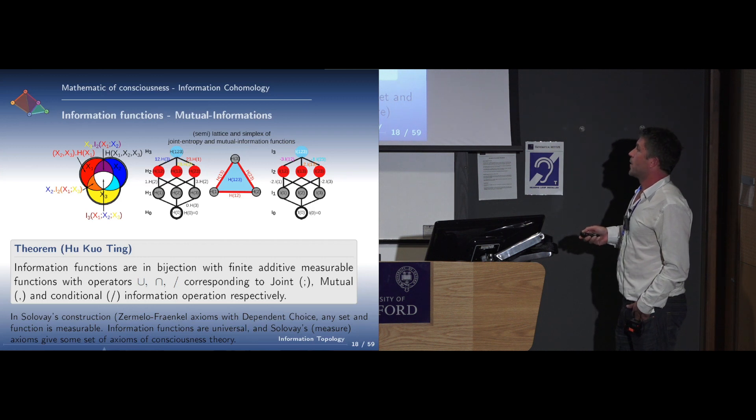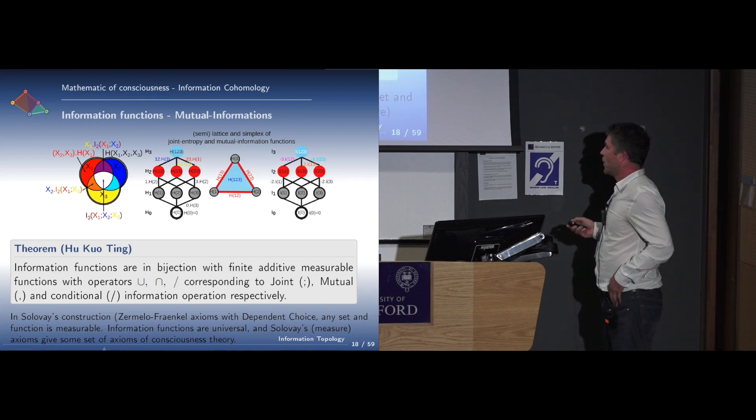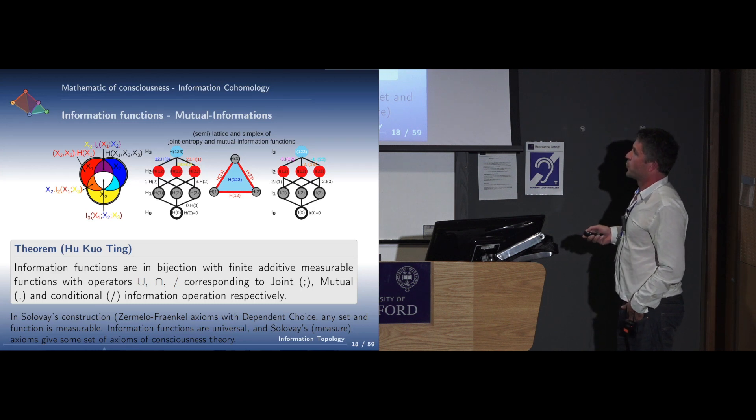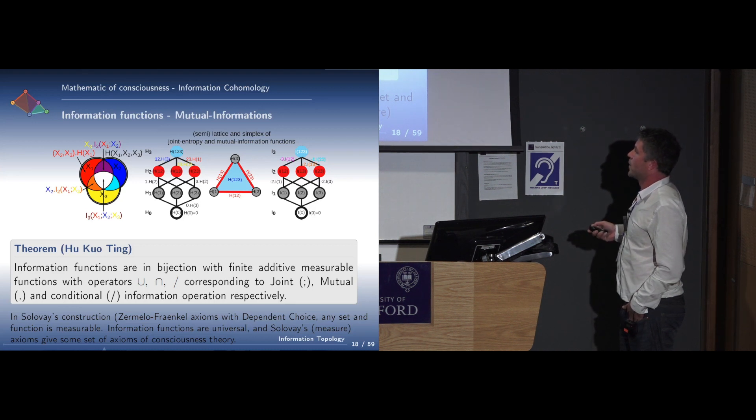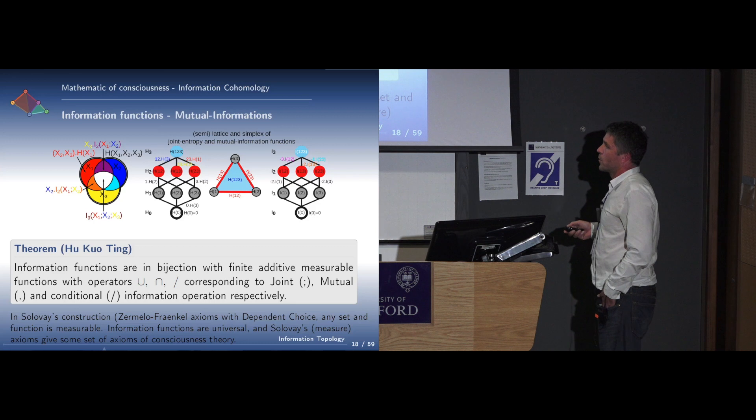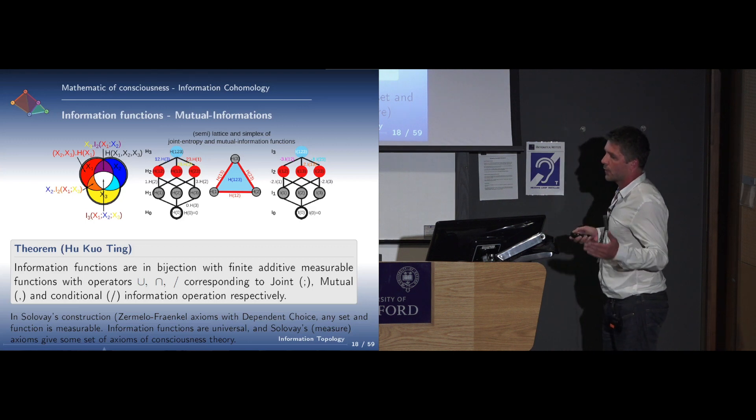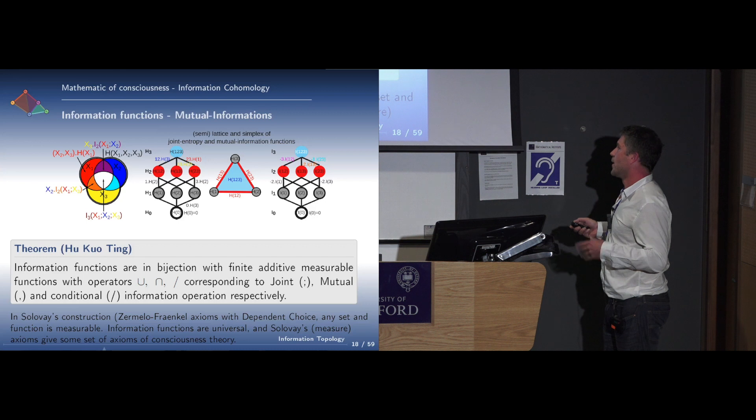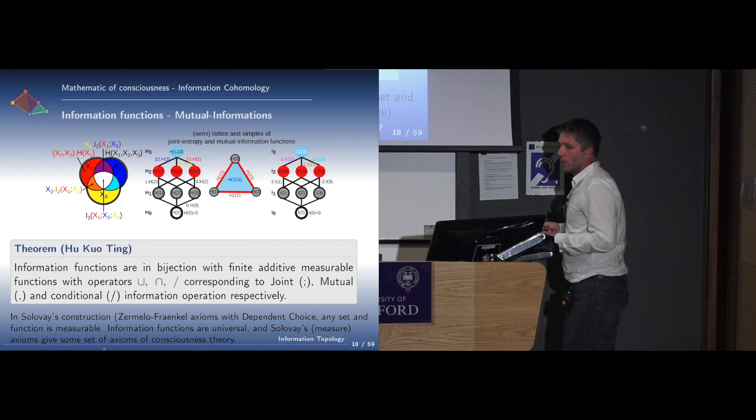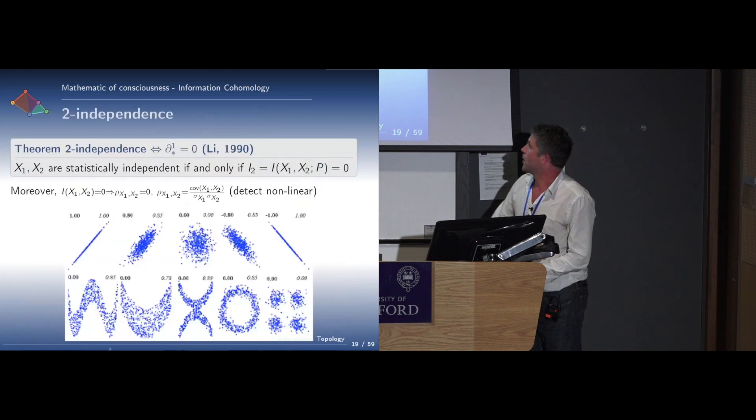In Solovay's construction of the Zermelo-Fraenkel axiom with dependent choice, which is a weak axiom of choice, any set and function are measurable. In this context, information functions become quite universal, and Solovay's measure axioms give some set of axioms for consciousness theory. You can see measure theory as stated first by Lebesgue in set theoretical terms, and then more generally as giving formal axioms for consciousness. It can be generalized in the context of category theory, which is currently at work.